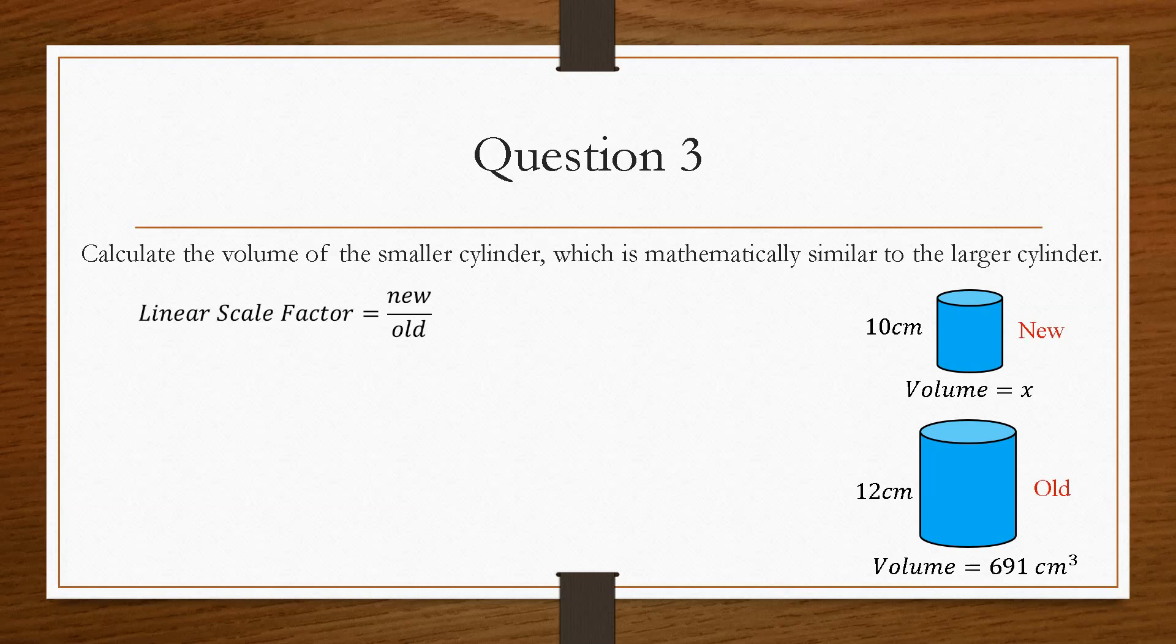Now, you always start with your linear scale factor, so new over old. And we have the ratio between these lengths here, so the 12 and the 10. However, this time, it becomes 10 over 12, which gives us 0.83. Now, remember from the introduction that a scale factor less than 1 indicates a reduction, which makes sense, because we're going from a large shape to a smaller shape. So by multiplying it by 0.83, we would end up with a less value than what we started with.